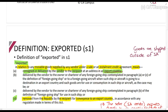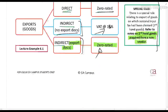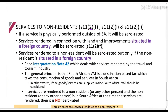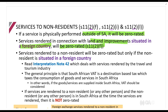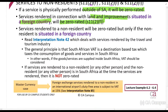We have been looking at the export of goods, which is only for movable goods. But Section 11(2) also covers services. If I am a South African vendor and I render services outside of South Africa — for example, I fix computers and I perform those services outside of South Africa — it will be zero rated. Similarly, if I perform services relating to land or improvements in a foreign country, such as painting in Botswana, it is zero rated because I am not doing it in South Africa.